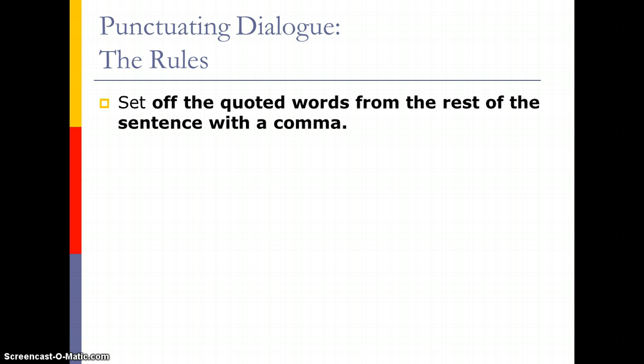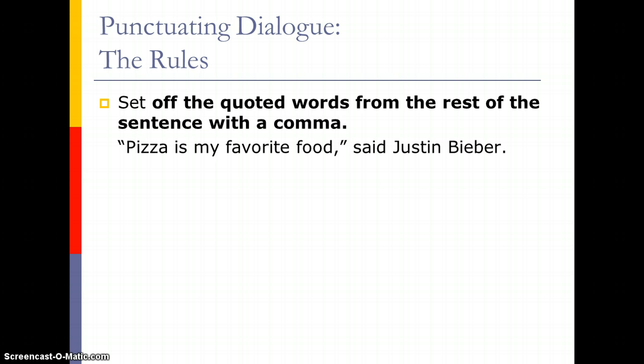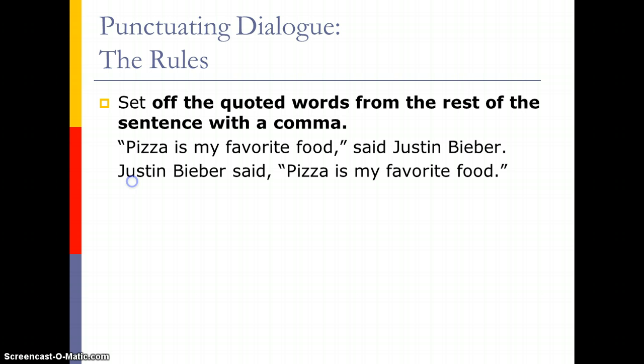Third, set off the quoted words from the rest of the sentence with a comma. For example: 'Pizza is my favorite food,' said Justin Bieber — needs a comma after it. That sets it apart from the part of the sentence that tells us who was speaking. In this second example: Justin Bieber said, 'Pizza is my favorite food.' The comma goes before the quotation marks. Either way, it's separating the exact quote from the rest of the sentence.